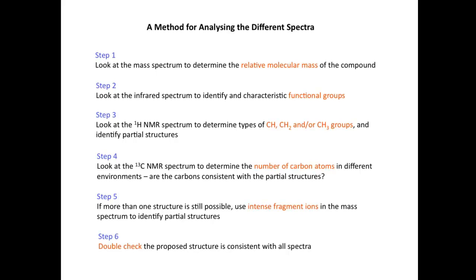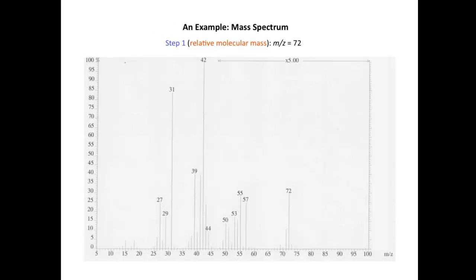So let's now have a look at an example. We're going to analyze first the mass spectrum. In step one, we look at the peak with the highest M/Z value, which is at 72, and we make the assumption that M/Z 72 is consistent with a relative molecular mass of 72.